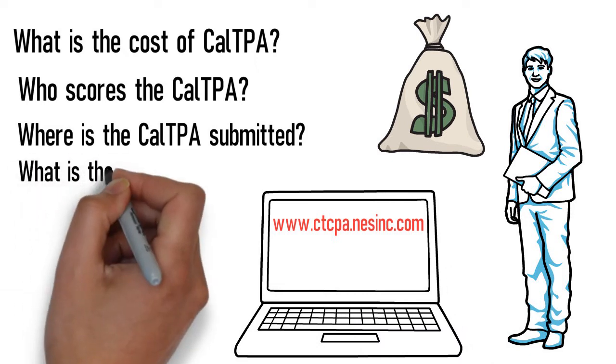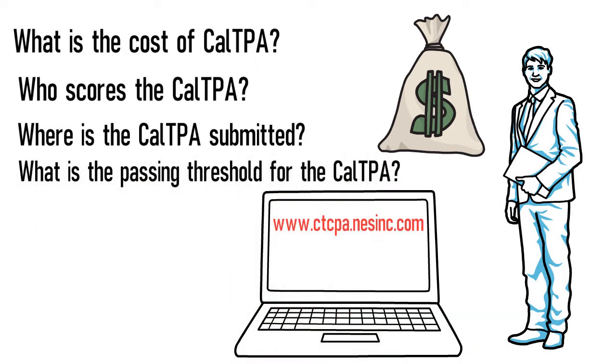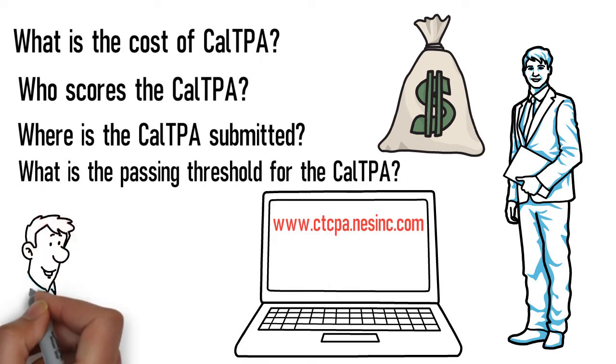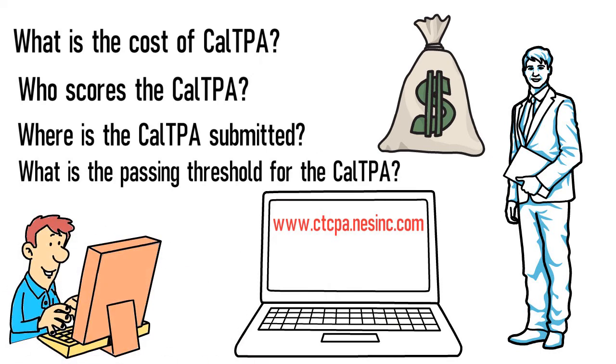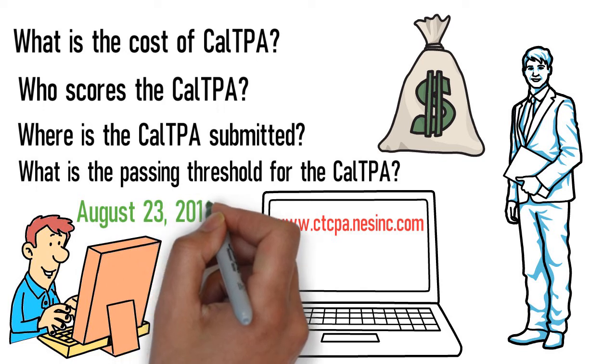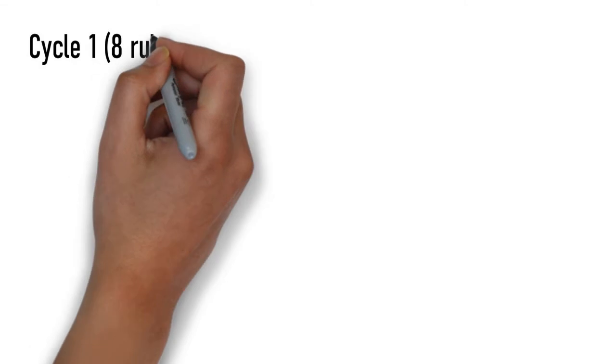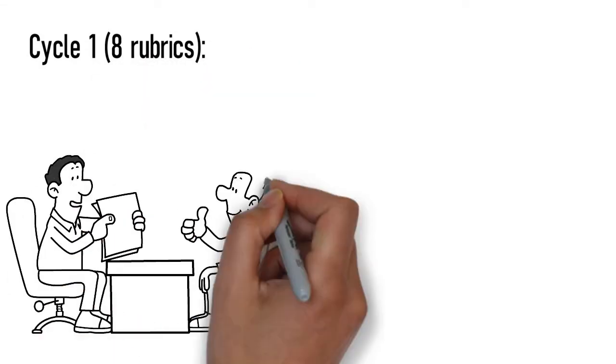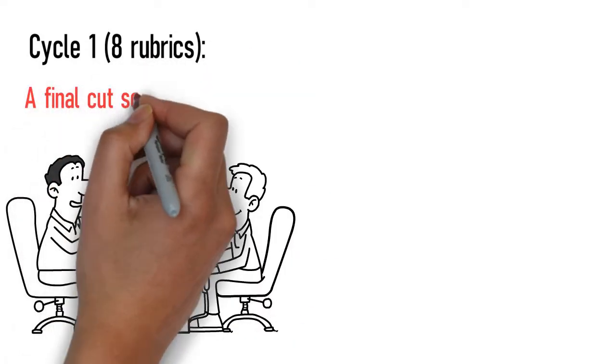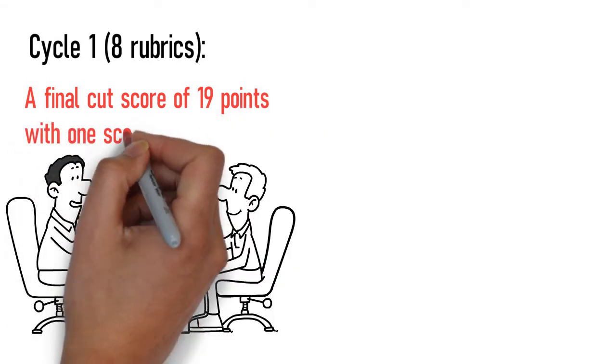What is the passing threshold for the CalTPA? The passing score standards for the redeveloped CalTPA as of August 23rd 2019 are as follows. Cycle 1 has eight rubrics with a final cut score of 19 points with one score of one allowed.